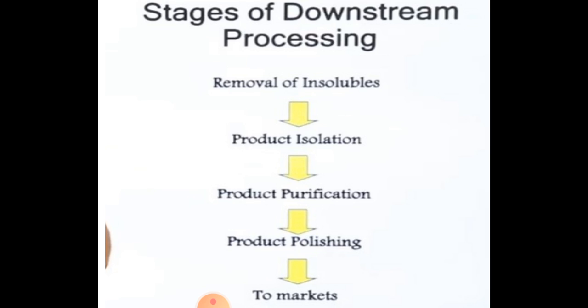The processes involve removing impurities. There are some stages - you can understand it in flowchart form: whatever is insoluble in the product, remove it - the insolubles; then extract the product we need, isolate it; then purify the product, polish it; and finally the product is sent to the market for marketing.